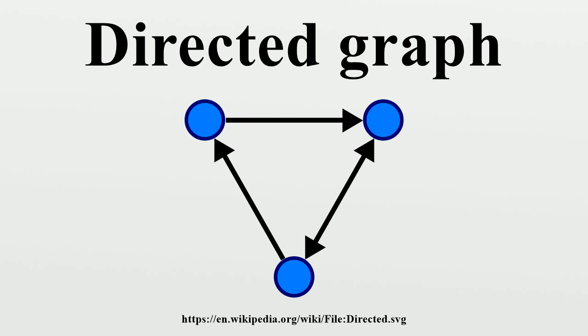A directed graph is called a directed multigraph or multidigraph if it may have multiple arrows. In the latter case, the arrow set forms a multiset, rather than a set, of ordered pairs of vertices.